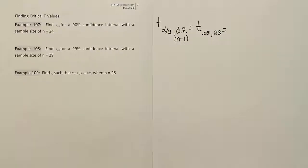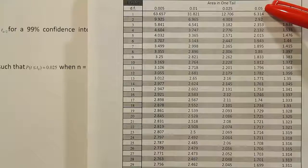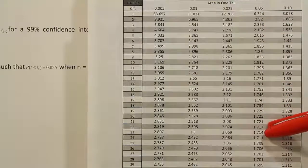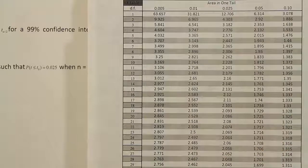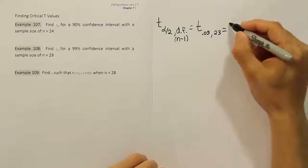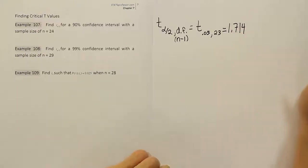Let's look at the t-table now. We're looking up 0.05 with 23 degrees of freedom. Here's the 0.05 column, and coming down to 23 degrees of freedom, we get the value 1.714. So the answer for example 107 is 1.714.